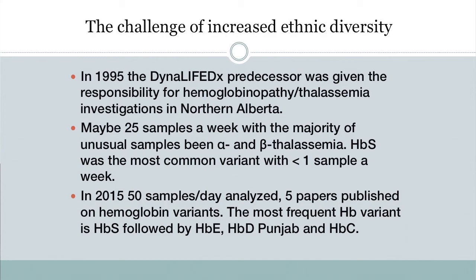The increase in ethnic diversity has significantly changed our experience with hemoglobin variants. In 1995, the predecessor to our current lab was given responsibility for hemoglobinopathy and thalassemia testing in northern Alberta — testing about 25 samples per week, with HbS as the most common variant but less than one per week. By 2015, we now analyze 50 samples per day, have five published papers on hemoglobin variants, and the most frequent variant in our population is hemoglobin S, followed by hemoglobin E, hemoglobin D Punjab, and hemoglobin C.